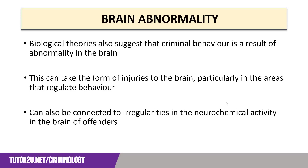Brain abnormality and neurochemical reactions are biological theories of criminality that suggest that criminal behavior is a result of abnormal functioning within the brain, either through the process of illness, injury, or inadequate functioning of neurotransmitters. In this video, we're going to look at some of the causes of crime attributed to these issues. As the brain regulates not only the functioning of our bodies but also our thought processes and intentions, examining issues with how the brain works offers criminologists many insights into why people commit crime.